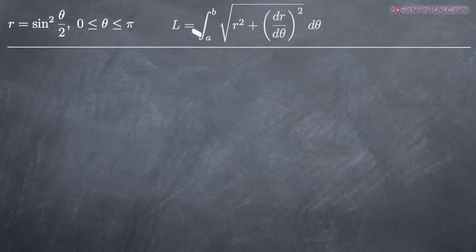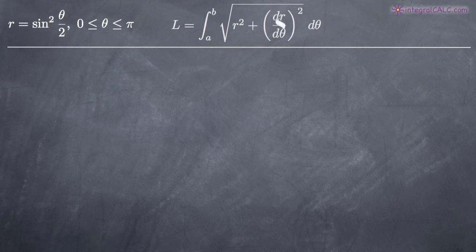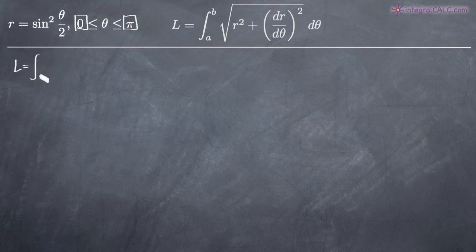The arc length formula we're going to use for a polar curve is L equals the integral from a to b of the square root of r squared — where r represents our original polar function — plus dr over d theta, the derivative of our original function, squared. Our limits of integration are zero and pi, so we'll integrate from zero to pi.